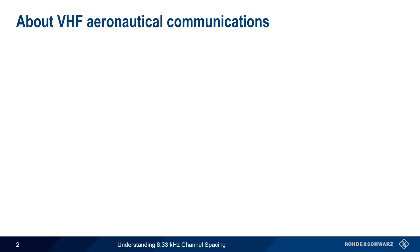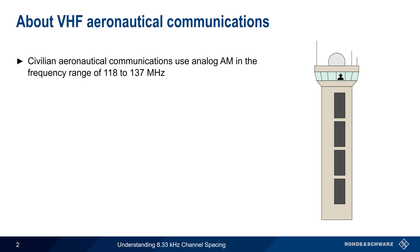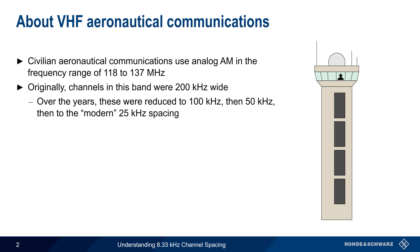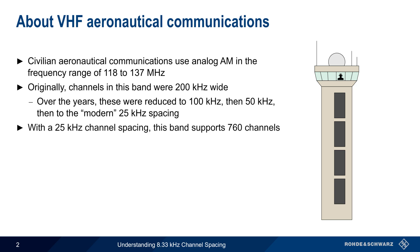Let's start with an overview of VHF aeronautical, or airband, communications. As you may already know, civilian aeronautical communications use analog AM in the frequency range of approximately 118 to 137 MHz. In the early days of aviation, these channels were 200 kHz wide, but over the years the bandwidth has been progressively reduced — first to 100 kHz, then 50 kHz, and then to the modern 25 kHz channel width. At a width of 25 kHz, this band can support up to 760 channels.